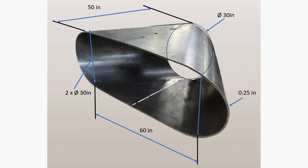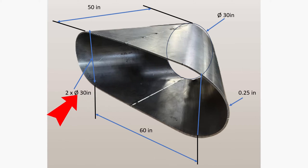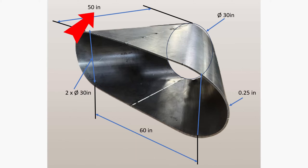In this tutorial, we will create a model that transitions from a circular shape to a rectangular round shape. The specifications for this project are as follows: circle diameter, 30 inches; rectangular round diameter, 30 inches; distance between centers, 60 inches; length of transition, 50 inches.